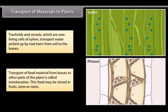Transport of food material from leaves to other parts of the plant is called translocation. This food may be stored in fruits, stem or roots.